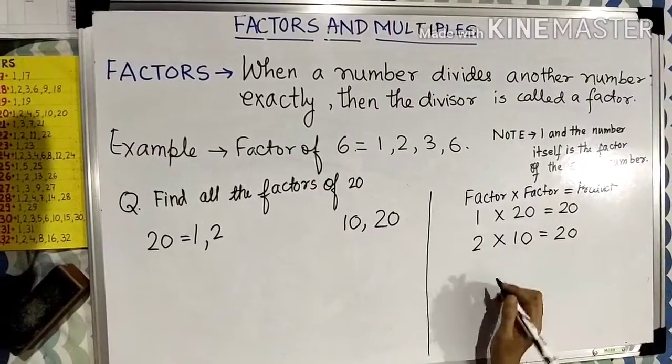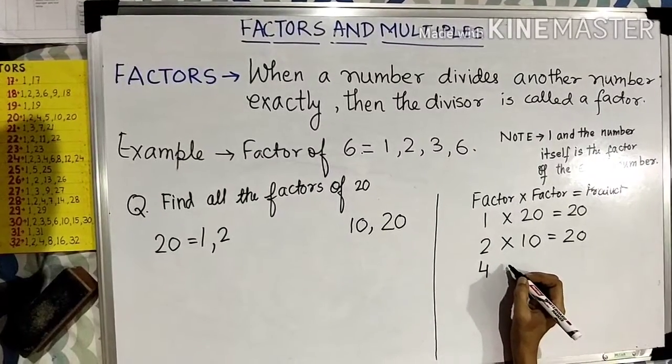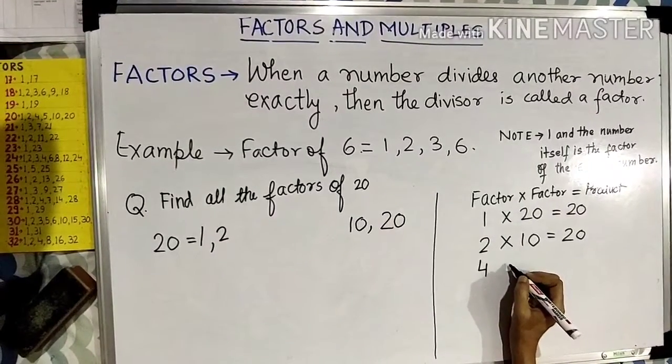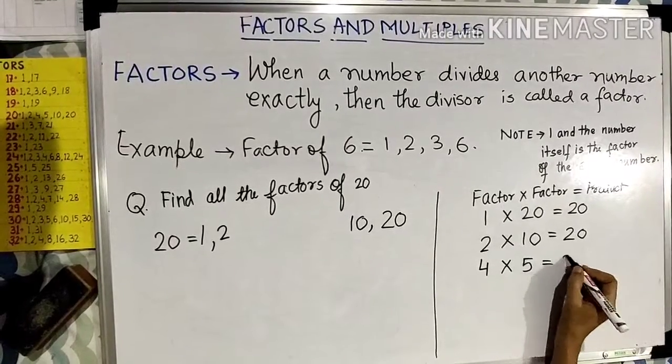Now let us go for next number that is 4. 4 1s are 4, 4 2s are 8, 4 3s are 12, 4 4s are 16, 4 5s are 20.